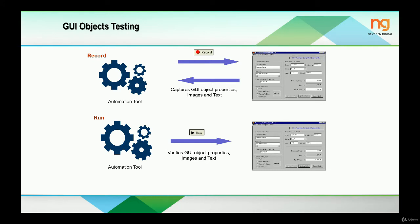Don't worry right now — we have detailed lectures on the element properties later in the course. After finishing the recording, we can use the run feature, which will verify GUI object properties, images and text, and it will also run our flow of actions which we have already recorded.